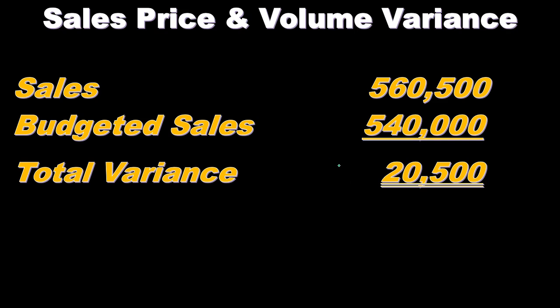We can consider this if we just had a normal type of budget. Here's what the sales actually were, here's what we budgeted them to be — we have a difference of $20,500. That's great. Let's make decisions based on that, and consider that as part of our decision-making process for the next time period to see what we should do next.